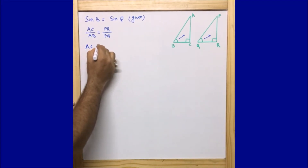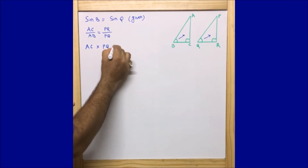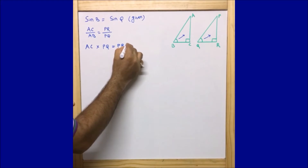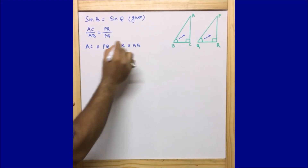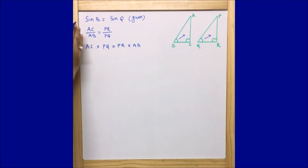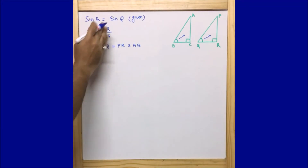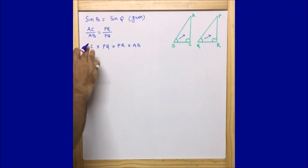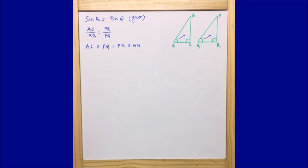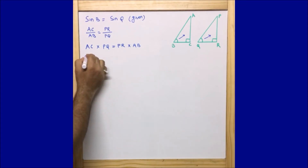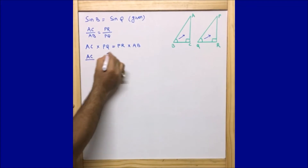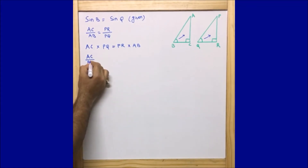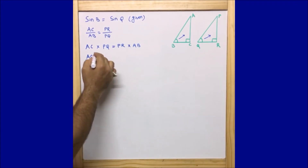With these two things in hand, let us do a cross multiplication. Since sine B equals sine Q, we have AC/AB = PR/PQ, which gives us AC into PQ is equal to PR into AB. I took AC/AB for sine B and PR/PQ for sine Q, then cross-multiplied to get AC·PQ = PR·AB.